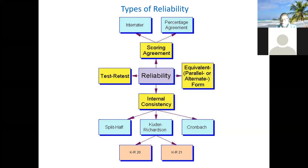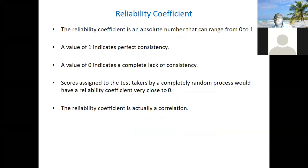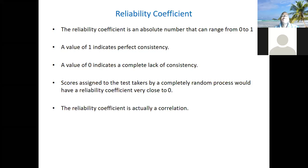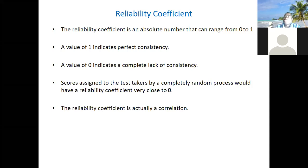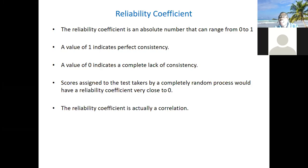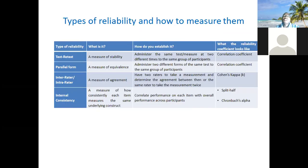If all the questions point toward the same construct, then if somebody scores high in one, they should score high in the others. If somebody scores low in one, they should score low in the others. Even though they are different questions, they are all pointing towards the same thing. That is internal consistency. To measure this, people have come up with a reliability coefficient — similar to correlation — to quantify the degree to which the instrument is consistent. It is on a scale of zero to one, without negative values — it's essentially a correlation coefficient without negative values.